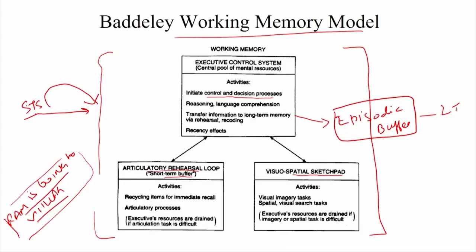A third component of the working memory model is the episodic buffer. The job of the episodic buffer is to communicate with LTM. The episodic buffer does a feed-forward and feedback connection with LTM — it takes information to LTM and also retrieves information back from it. An experiment was done to test the existence and capacity of the phonological loop.